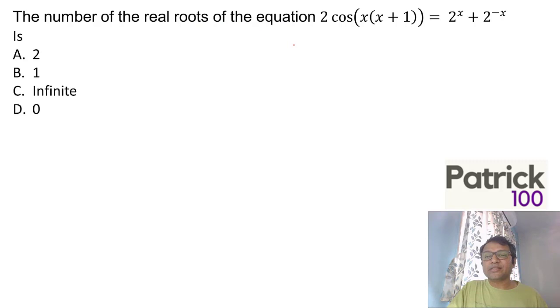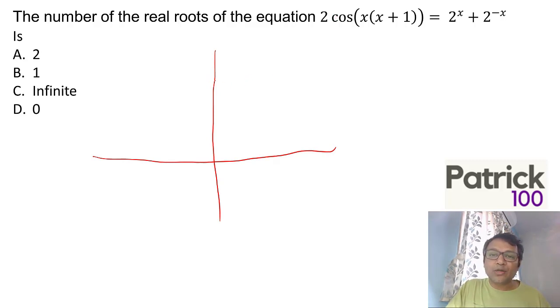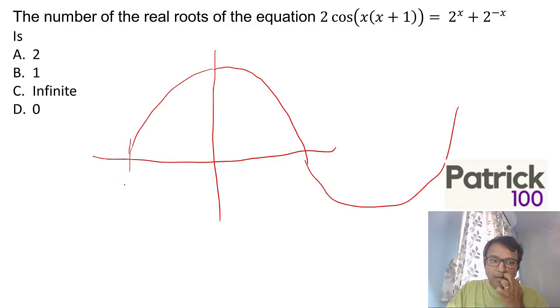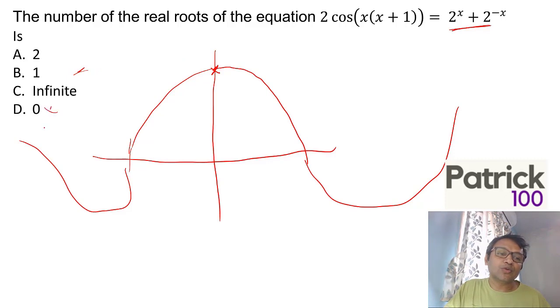The number of real roots of the equation - normally I tend to draw the equations. First part: cos, so 2cos(x) at x=0 is 2. The cos curve goes like this. Right hand side: when I put x=0, I get 2, so they meet at this point. So one solution is for sure, so 0 is ruled out.